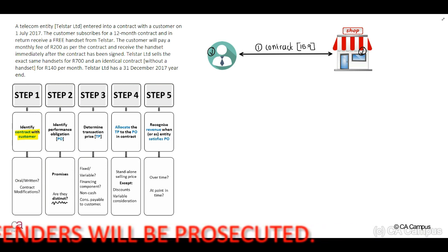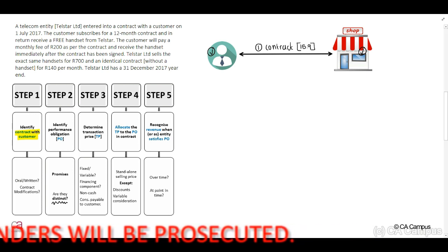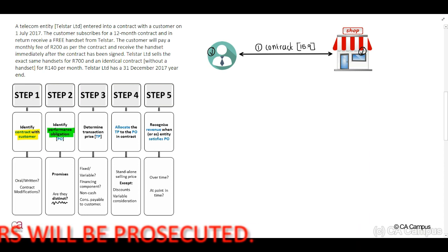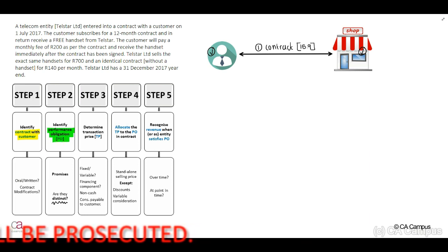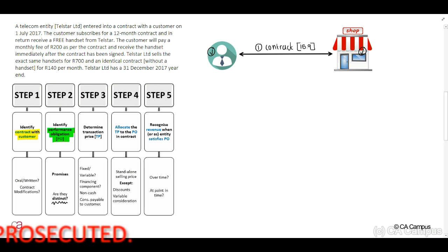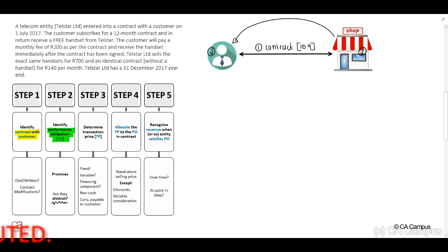The second step, we need to identify the performance obligation. What is a performance obligation? This will be a promise by our entity to deliver distinct goods or services, or a series of distinct goods or services, to our customer.